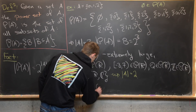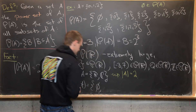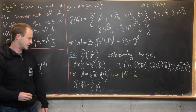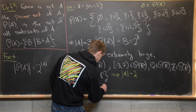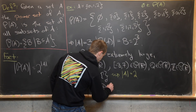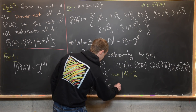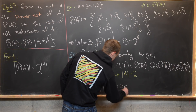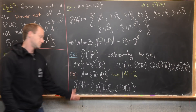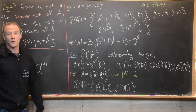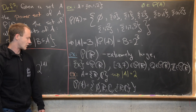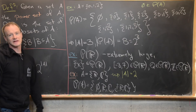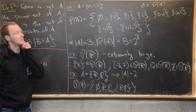Since |A| = 2, the power set of A should have four elements, which is 2². We have the empty set (since the empty set is a subset of any set), then the set containing just ℝ, the set containing just ℂ, and the set containing both ℝ and ℂ. So there are four elements in the power set.